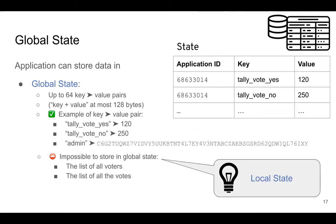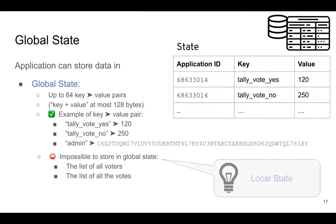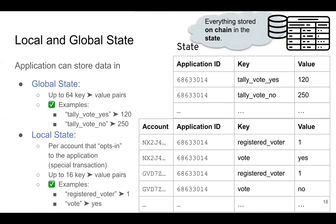For example, at the beginning of time Alice has 20 Algos, Bob has 7 Algos. Suppose there is a single transaction in the blockchain. After executing it, everybody agrees on the resulting state, so every node has the same state database. The global and local states for each application are part of this big state database.